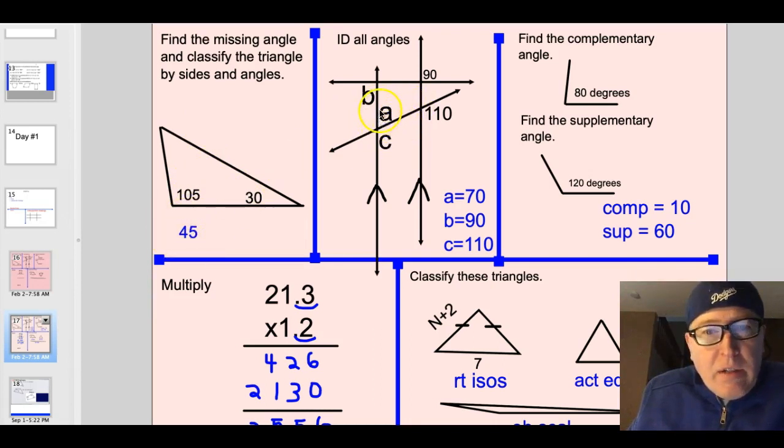All right we need to find a, b, and c. These things are getting a little more complicated. Well b is going to be a 90 degree angle because these two are parallel and they're bisected by this one. So if this is a 90 degree angle that means all four angles here are 90 degrees and all four angles here are 90 degrees.